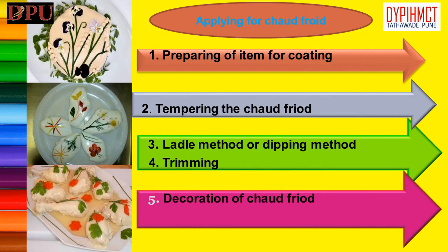Trimming is the final step in preparing the item for decoration. Carefully the item is removed from the pan by cutting away around the base of the product with a palette knife. The product can now be called chaud-froid. Chaud-froid items are decorated with food items — vegetables, capers, chives, caviar, slices of olives — which are dipped in warm aspic jelly and placed on the surface. Finally it is glazed with tempered aspic jelly to make it sparkling and fresh.